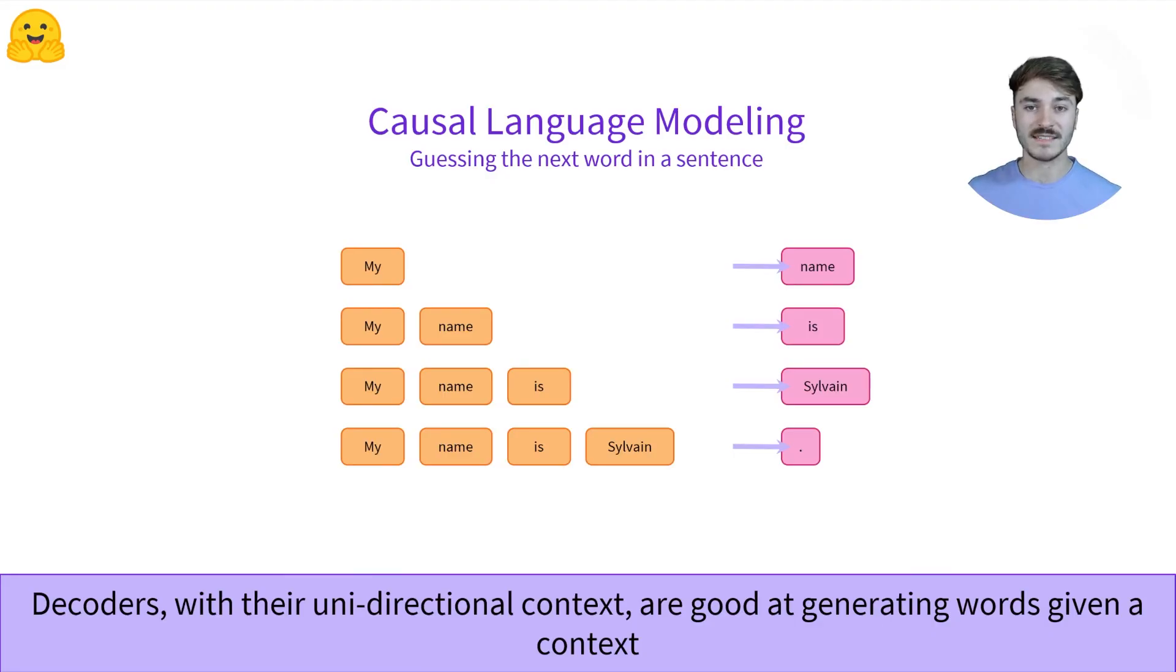GPT-2, for example, has a maximum context size of 1024. We could eventually generate up to 1024 words, and the decoder would still have some memory of the first words in the sequence.